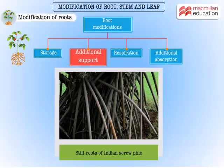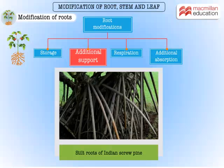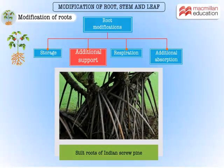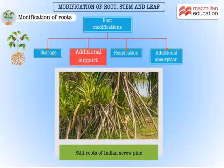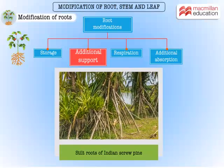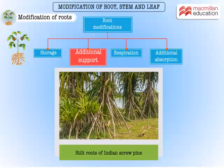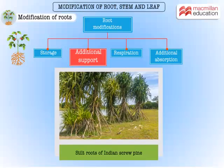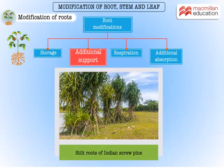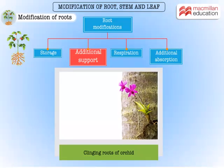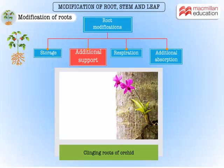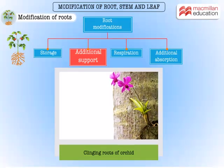The Indian scrupine or pandanus plant has stilt roots. The plant develops roots that grow obliquely downwards. These roots act like stilts, providing mechanical support to the plant. Roots of orchids have an amazing function — their clinging roots provide additional support.